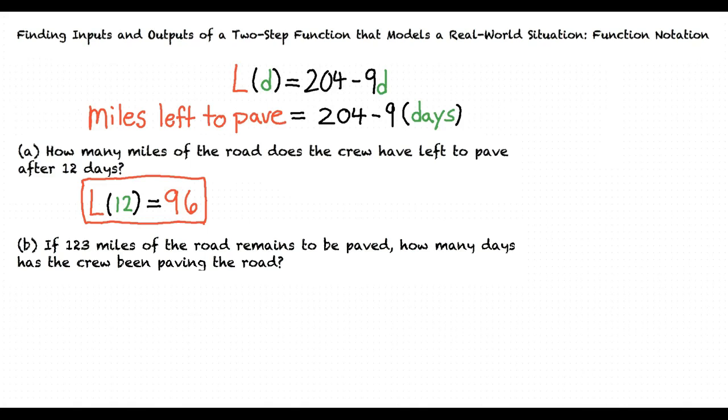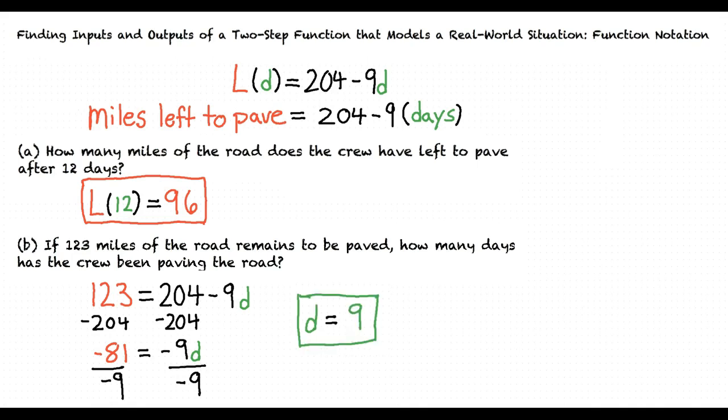To solve for this answer, we will set the equation we were given equal to 123 miles and solve for the amount of days D in the equation. Setting it up this way, your function will look like this. Our first step in solving is to subtract 204 from both sides. Doing this, our function will now look like this. We now divide both sides of the equation by negative 9 to isolate the D variable. Doing this, we will find that D equals 9. This means that if there are 123 miles left to be paved, the crew has been paving for 9 days.